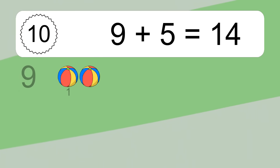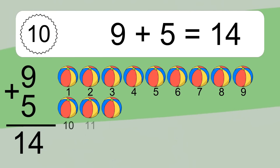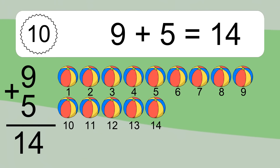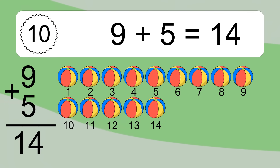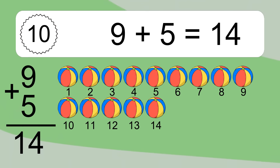9 plus 5 equals what? 9 plus 5 equals 14. Let's count it: 1, 2, 3, 4, 5, 6, 7, 8, 9, 10, 11, 12, 13, 14.